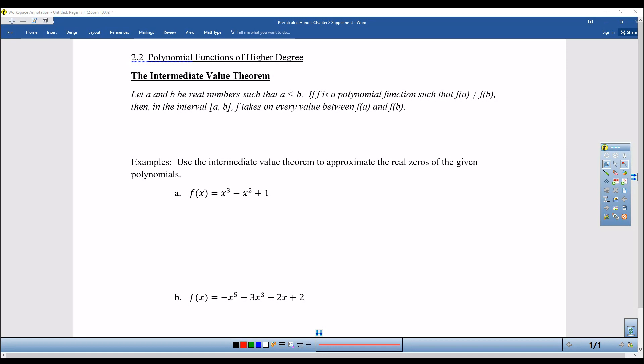So the intermediate value theorem says let A and B be real numbers such that A is less than B. If F is a polynomial function, so let's not overthink that F is a function. They just call it F. You could call it F of X. Such that F of A is not equal to F of B.